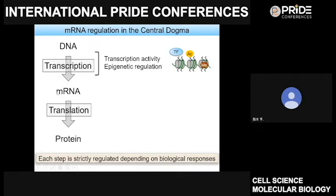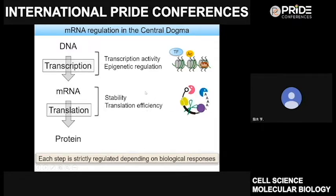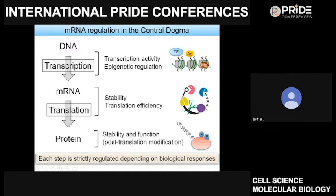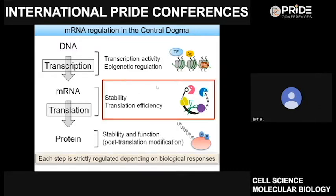In the second step, various mRNA binding proteins regulate the stability of mRNA and initiation of translation. In the last step, protein stability and function are regulated by post-transcriptional modification such as ubiquitination. This regulation of these mechanisms is relevant to the development of various diseases. Our focus is the regulation of mRNA, mainly regulation of mRNA stability.